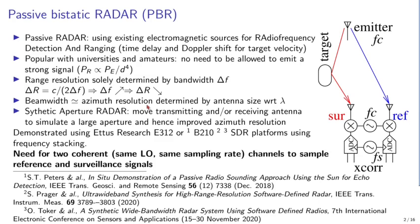In order to achieve high azimuth resolution, synthetic aperture radar is based on the idea of moving the receiving antenna along a path, synthesizing an equivalent aperture equal to the path length traveled as we successively measure the reference signal and target echoes. This technique has been demonstrated using a wide range of sources.